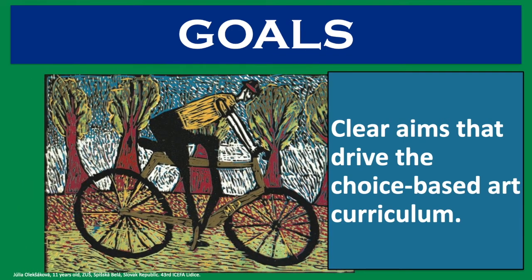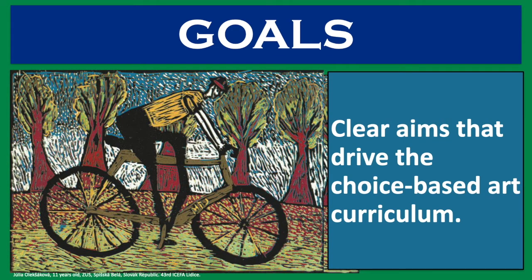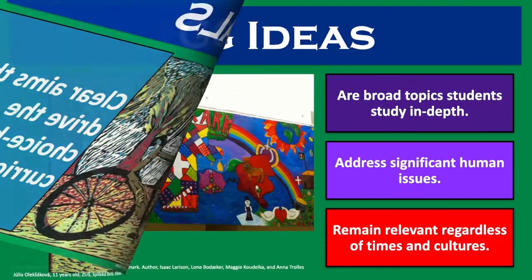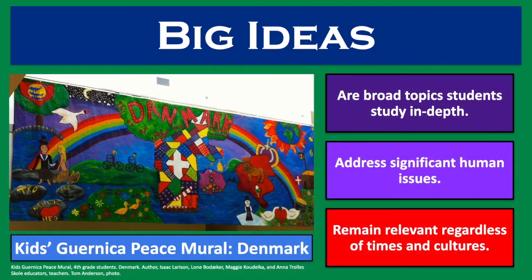Goals are clear aims that drive the choice-based arts curriculum. This student artwork of a bicycle can serve as an analogy for teachers and students to set goals to get to where they want and need to go. Comprehensive lesson and unit plans include big ideas — broad topics students study in depth. They address significant human issues and remain relevant regardless of the times in which people live. This student mural centers on the big idea of peace. It is one of many kids' Guernica peace murals painted by children around the world.